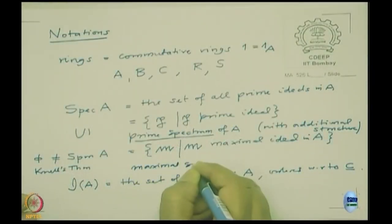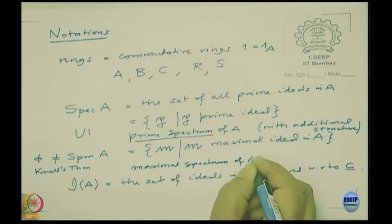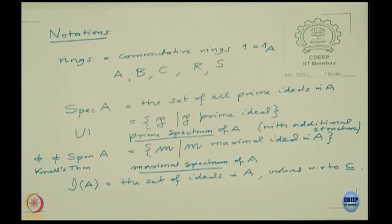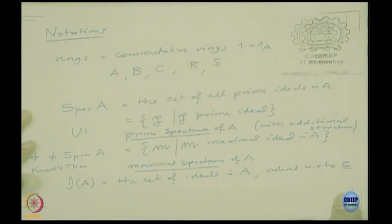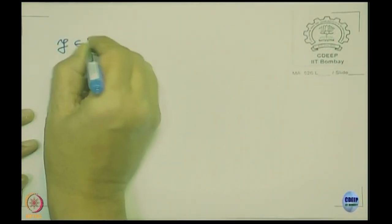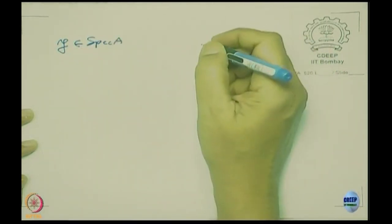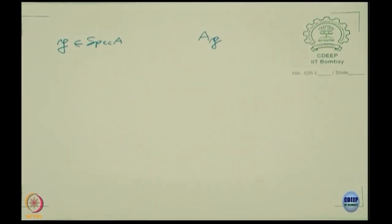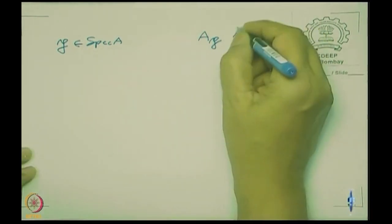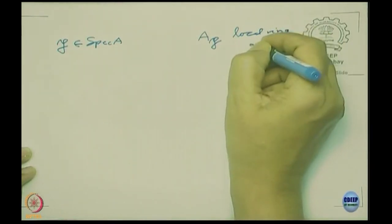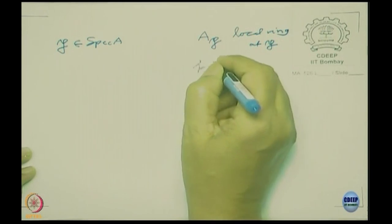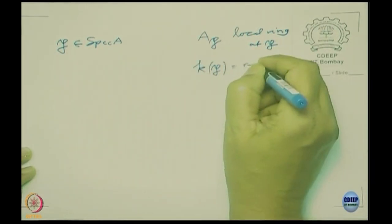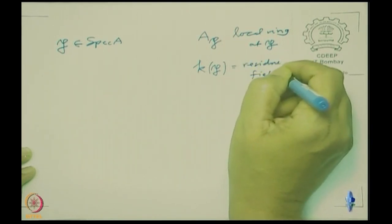SPM(A) is called the maximal spectrum. When we have a prime ideal p, we have a local ring associated to it — namely A localized at p. For every local ring there is a field associated to it, namely the residue field K(p). So A_p is the local ring at p, and K(p) is the residue field at p.